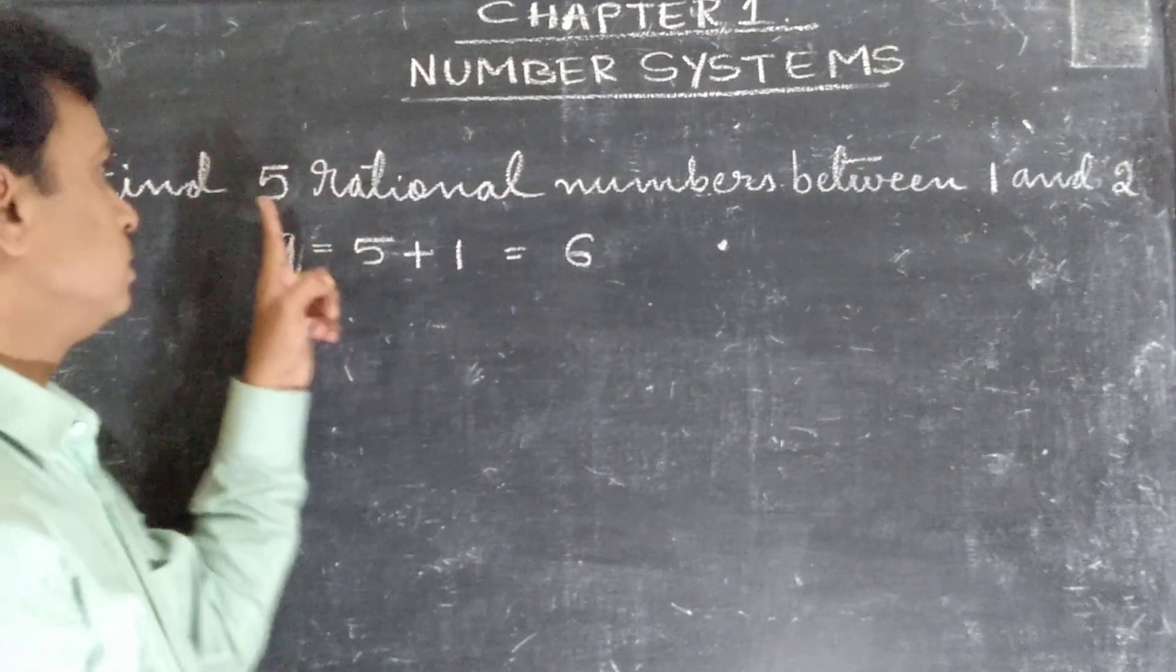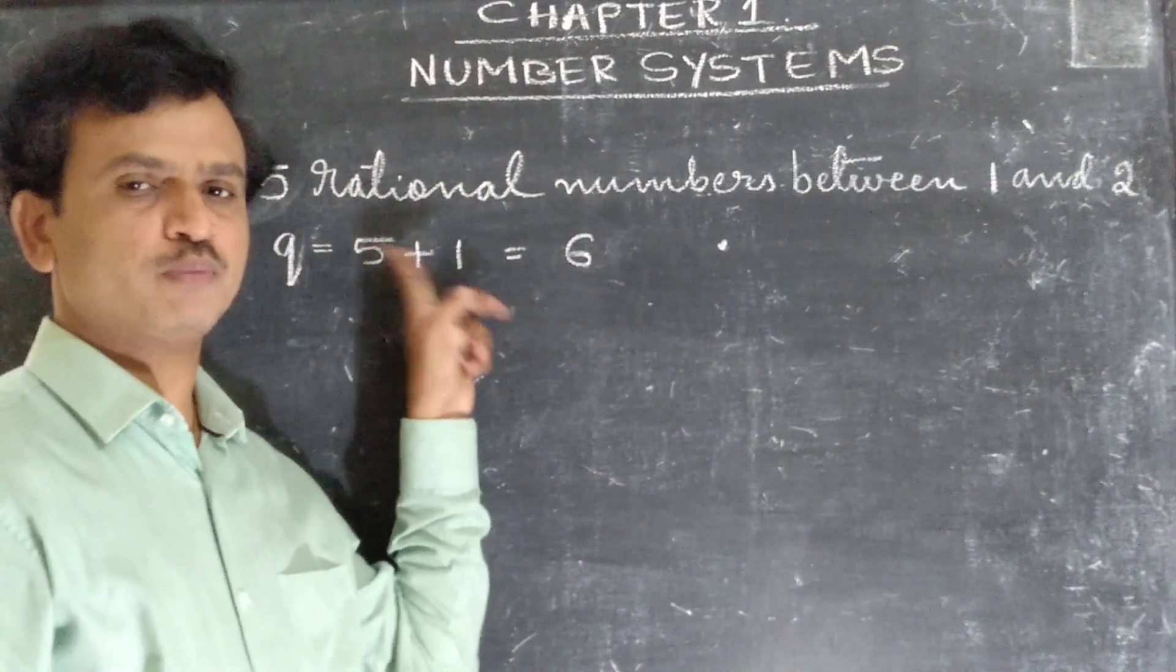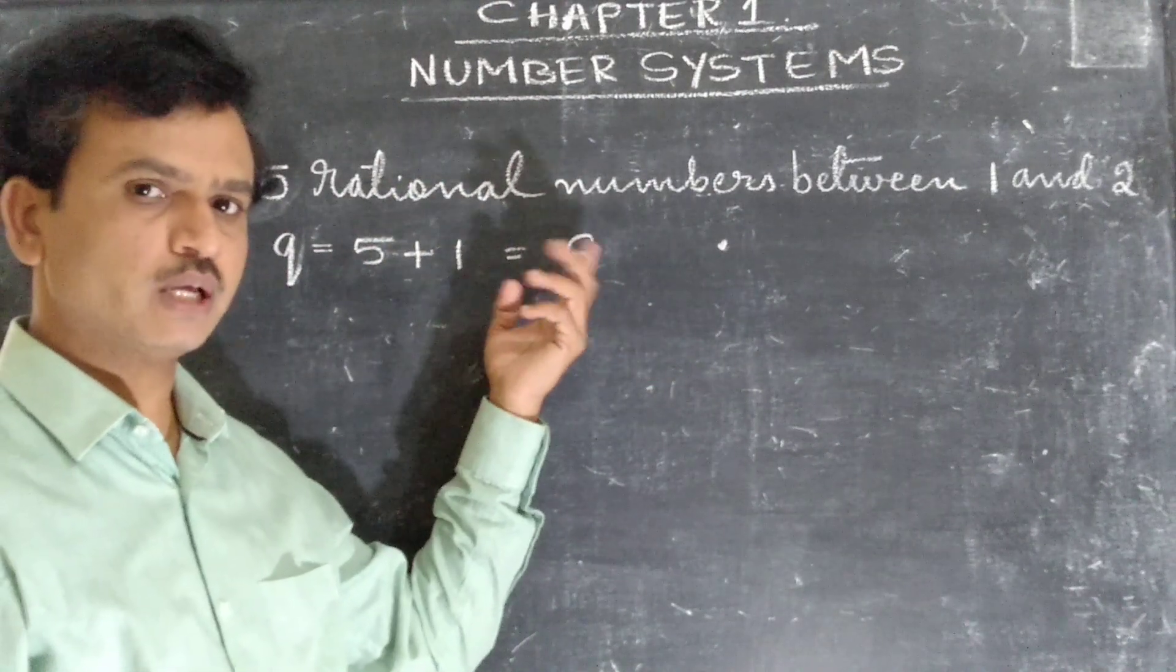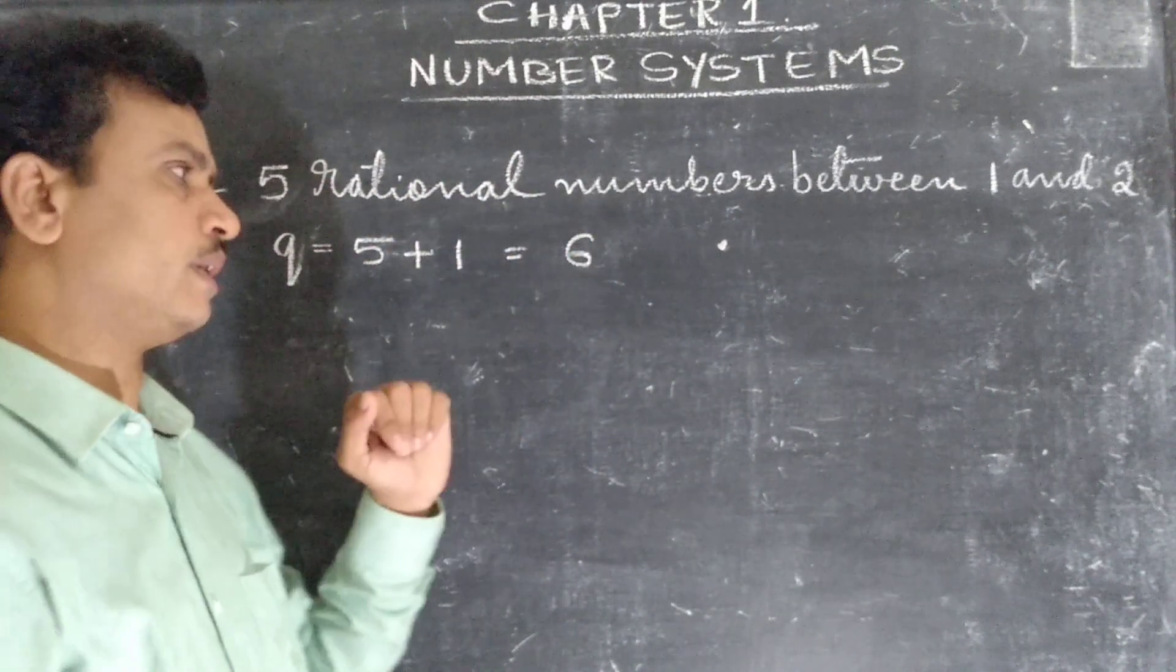One extra we should take. 5 rational numbers means we should take 5 plus 1, that is 6. If 6, then what should we take? 6 plus 1 is 7.